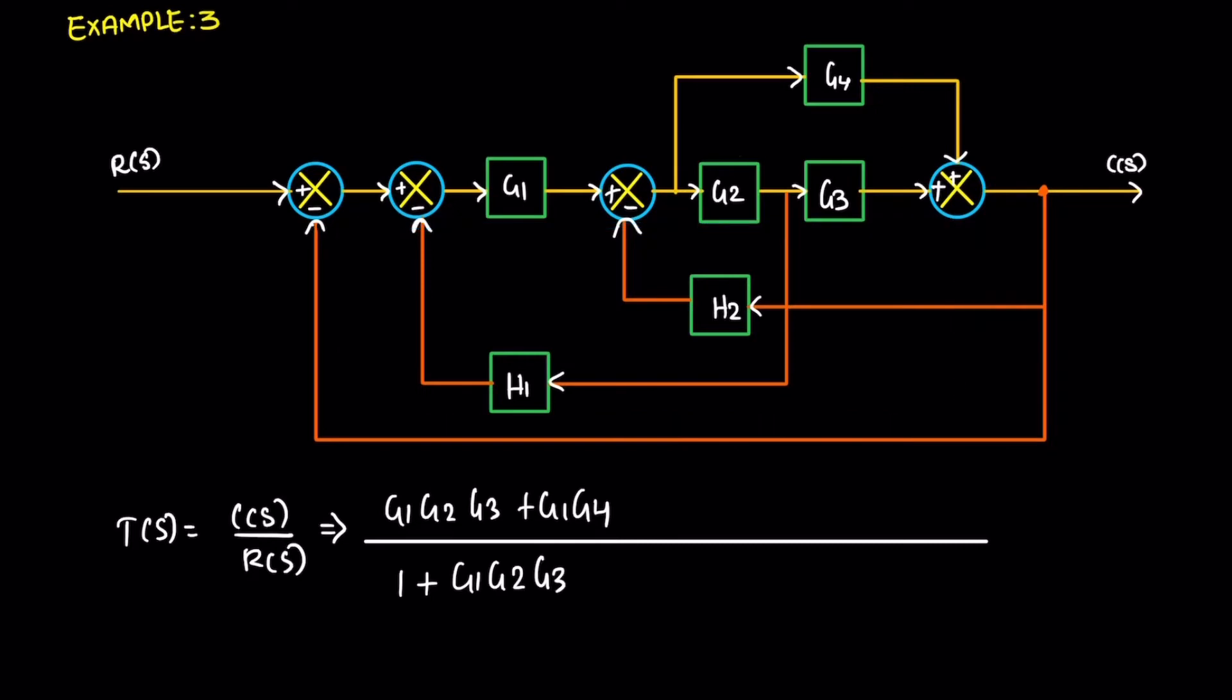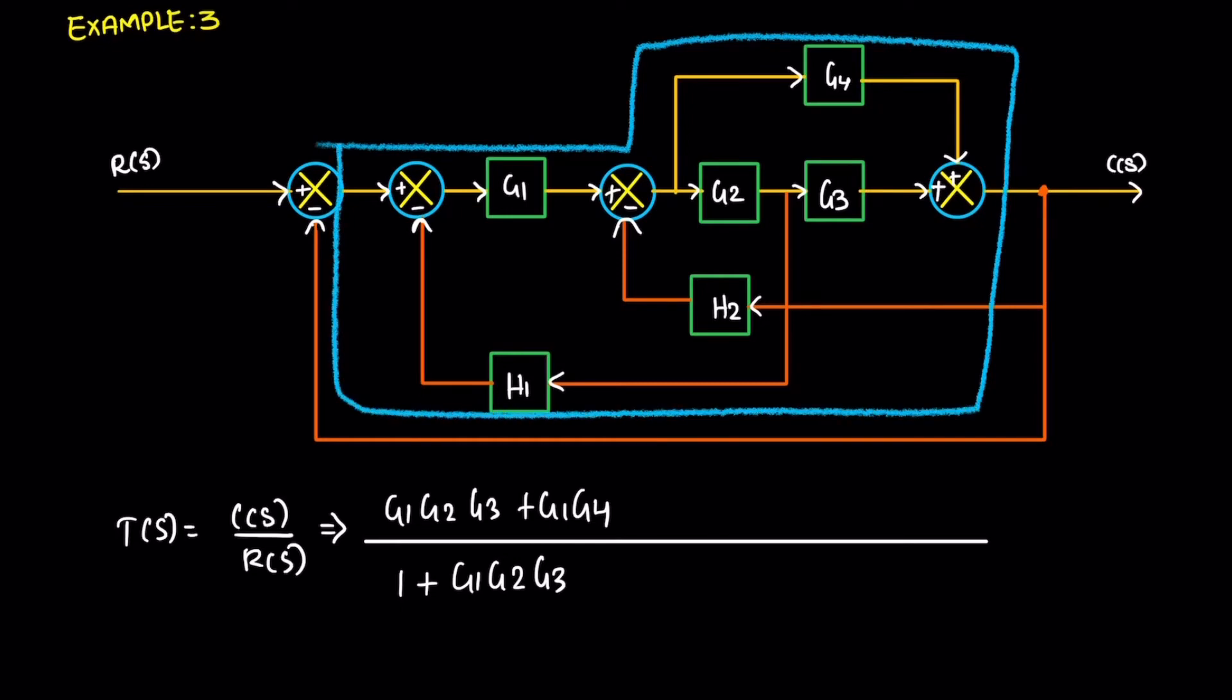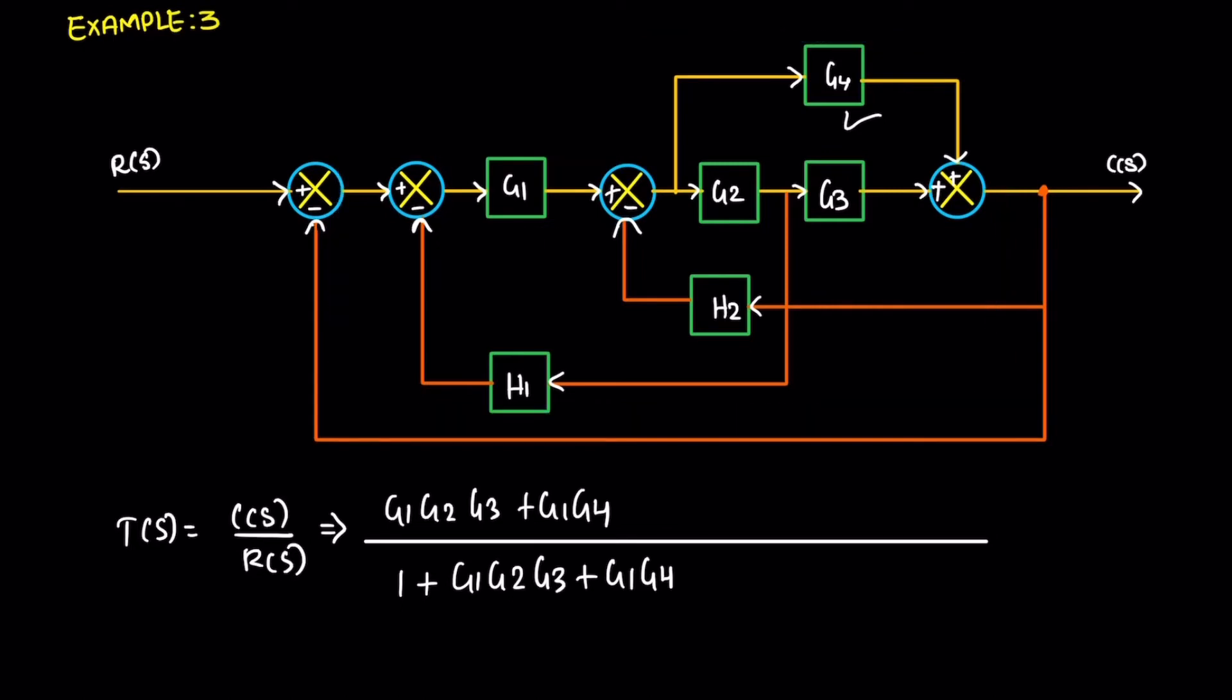Now the next path, the same summing point but a different way. The path gain value is the product of G1 and G4. So plus G1 and G4. This summing point is over.